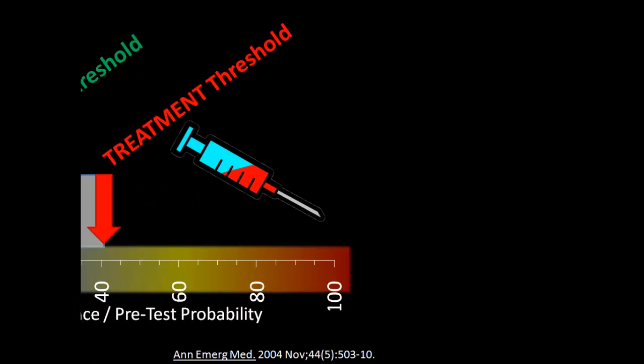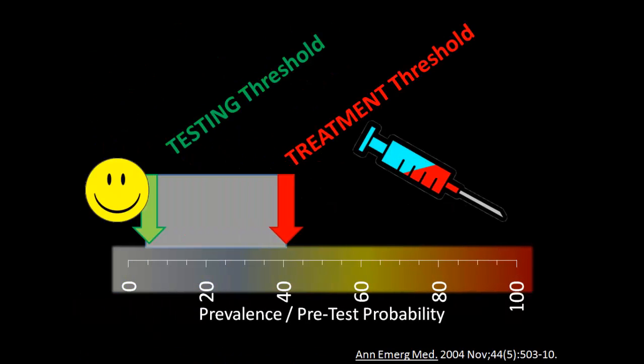Using online scores, we found that we could use the data to say that Bob has a pretest probability of about 15 or 16 percent. We see that that pretest probability of 15 or 16 percent puts Bob in the gray area. We don't know if we should go ahead and treat him, and we don't know if we can send him home. So this is where we need to decide if we're going to order some more tests.